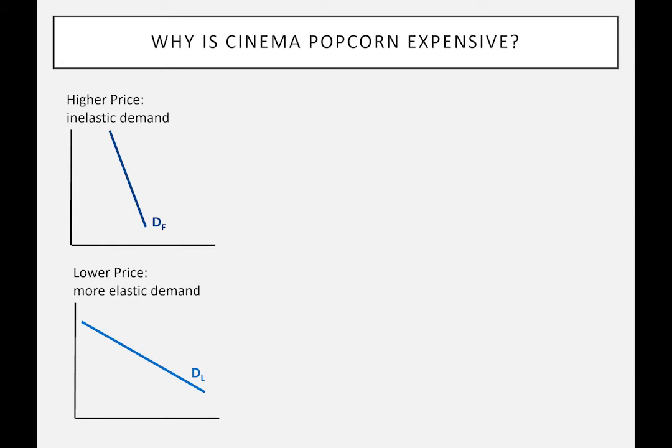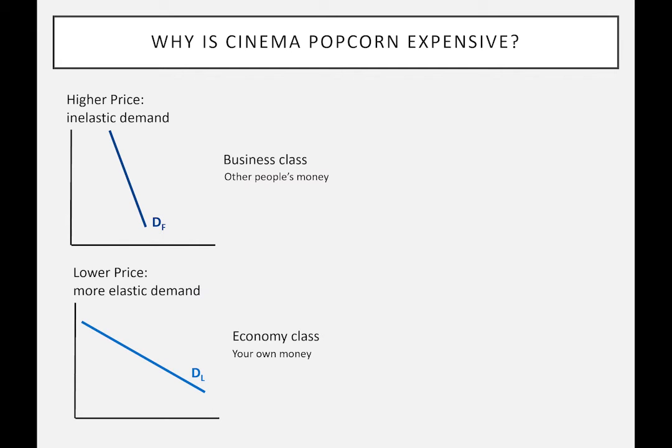Let's consider more examples. The group that is relatively inelastic faces the higher price. Take business class versus economy class airline tickets. Business class has wider seats, more benefits, and easier ticket changes — so it is more costly for the airline — but it's likely they're also practicing price discrimination. People traveling business class are typically spending someone else's money, which is why they tend to have a more inelastic demand curve.